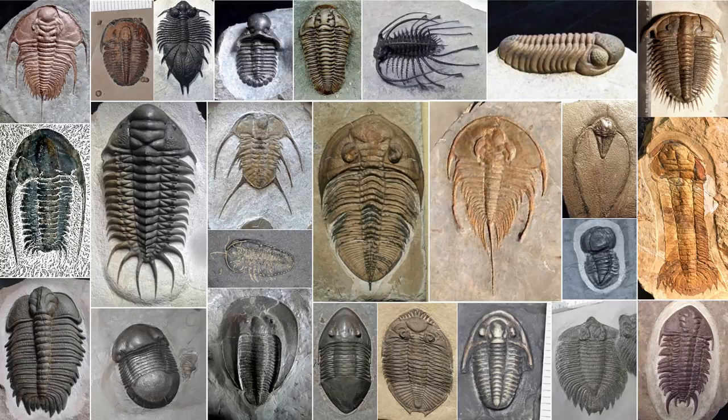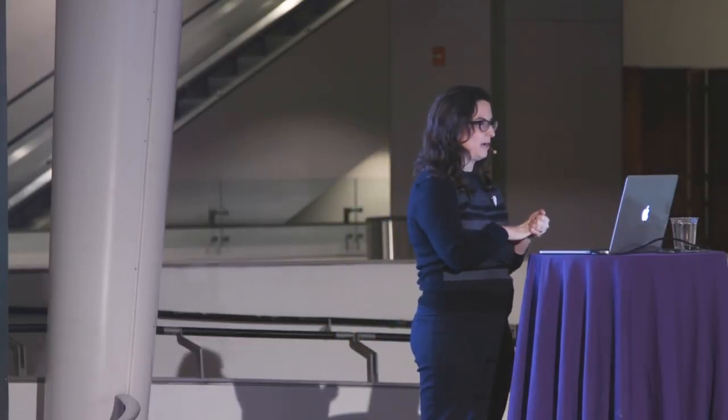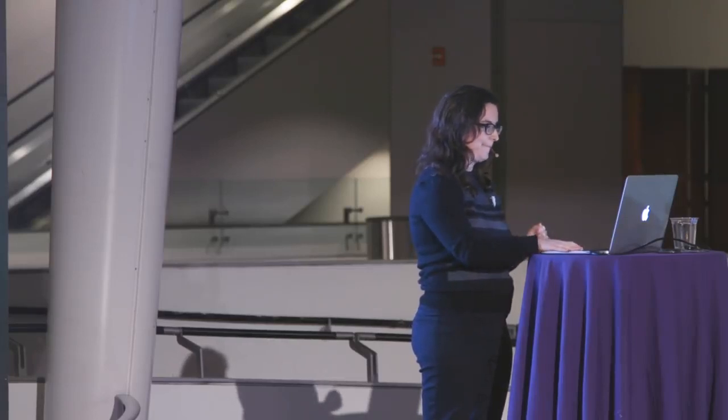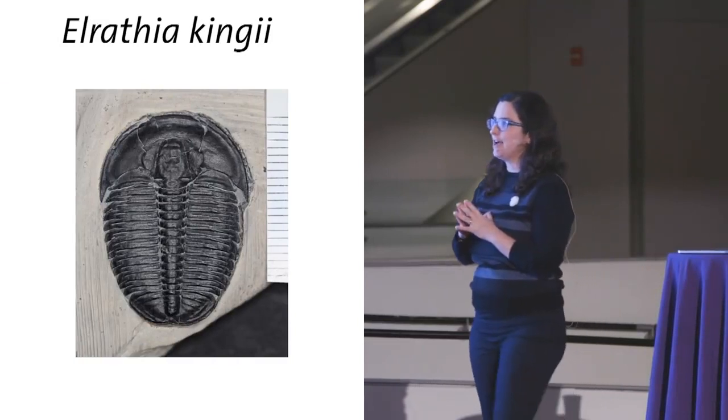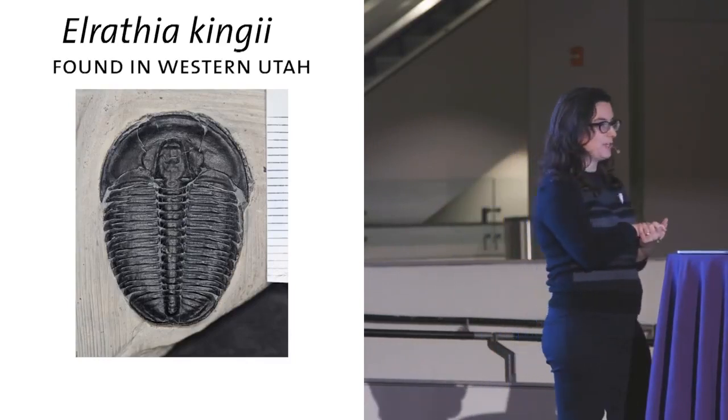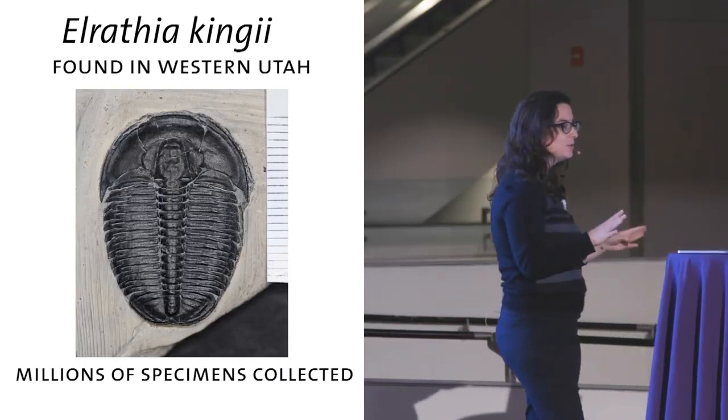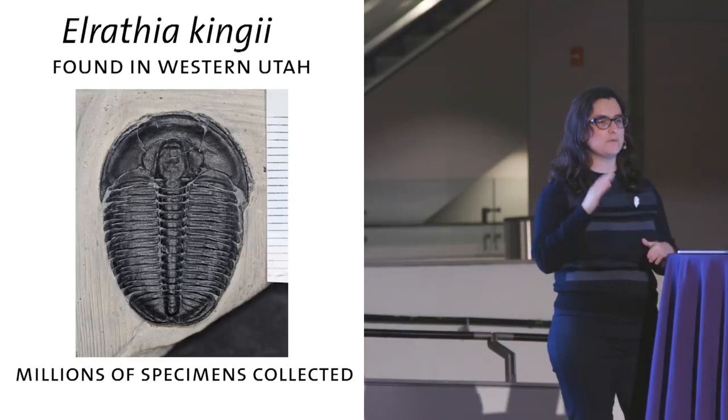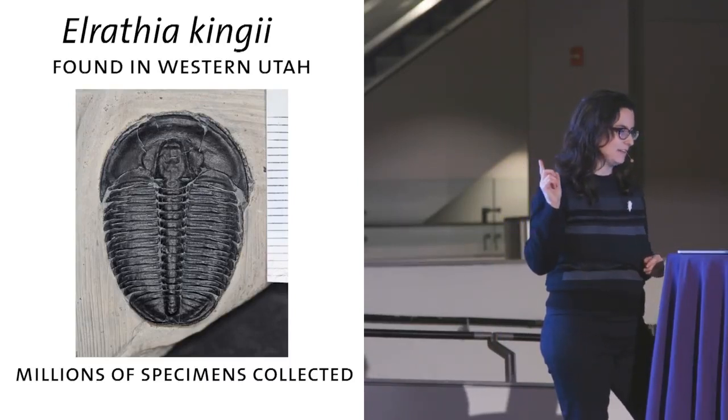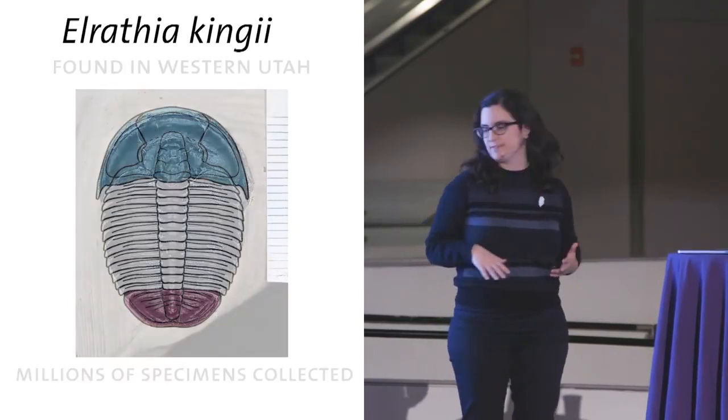So the big question then is how did this diversification happen? For the rest of my talk, I'm going to propose a mechanism for how this could have occurred in trilobites. But before I do that, I need to give you a little more information about trilobite anatomy and trilobite growth. I'm going to do that using Elrathia kingii. This might be a very familiar-looking trilobite to some of you. It's found in western Utah, but literally millions of specimens have been collected. It shows up in rock shops. It shows up in educational kits for schools. If you have a trilobite fossil at home, I wouldn't be surprised to find out this was what you had.